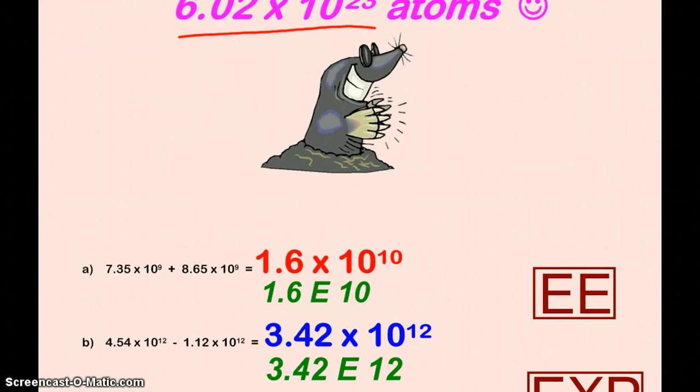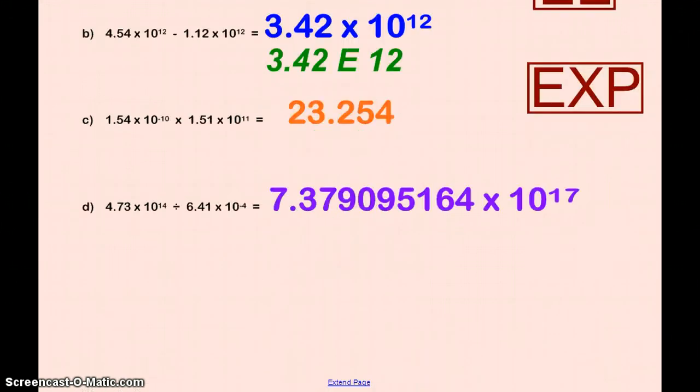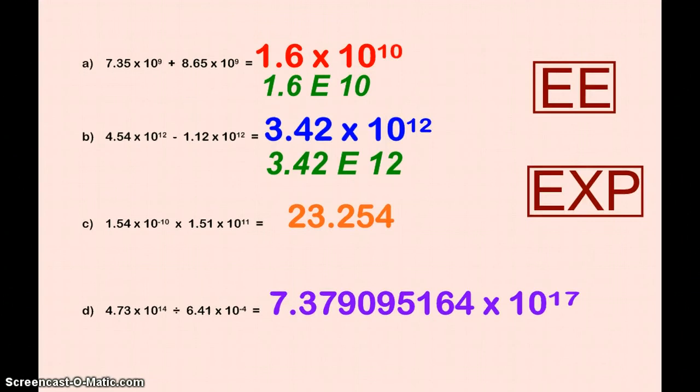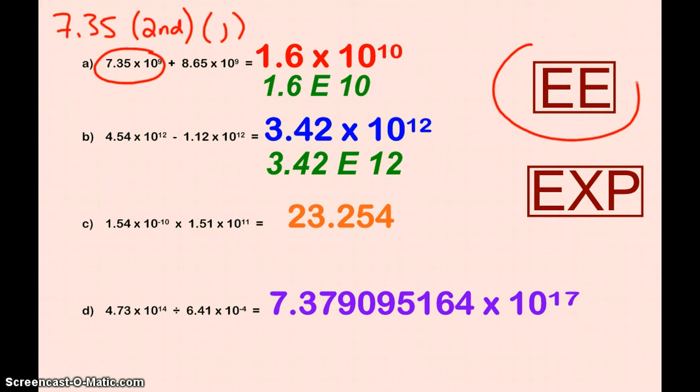Now, with scientific notation in our calculations, we really want to try to be using the EE or EXP key on our calculator. If you're using times 10 to the or Y to the X or the carat, you just run the risk of getting your calculator out of the order of operations and getting poor answers. So, like on the graphing calculator, if I wanted to type this number in, I would type 7.35. I would hit the second button, and then I would hit the comma, because above the comma is the EE symbol. And then I would just type in the 9.